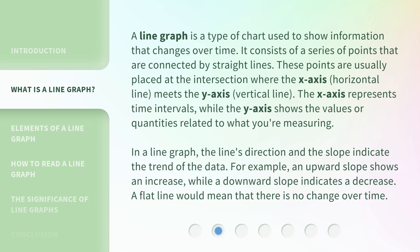In a line graph, the line's direction and the slope indicate the trend of the data. For example, an upward slope shows an increase, while a downward slope indicates a decrease. A flat line would mean that there is no change over time.